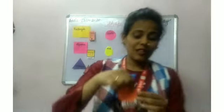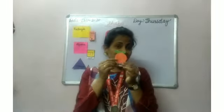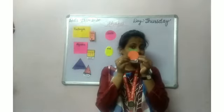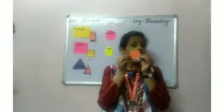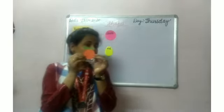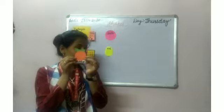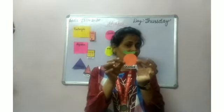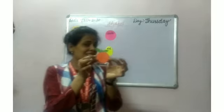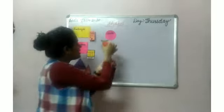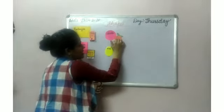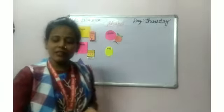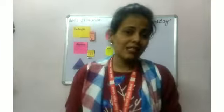What is this? This is orange. What is the shape of the orange? Circle. Yes, the shape of the orange is circle.